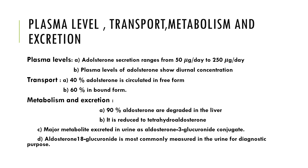For metabolism and excretion, 90 percent of aldosterone is degraded in the liver. It is reduced to tetrahydroaldosterone and excreted in urine as aldosterone-3-glucuronide conjugate. Aldosterone-18-glucuronide is the most commonly measured in urine for diagnostic purposes. The plasma level varies according to sodium intake, and there is a diurnal variation in aldosterone concentration that is not affected by sodium intake, posture, ACTH, or any exogenous glucocorticoids.